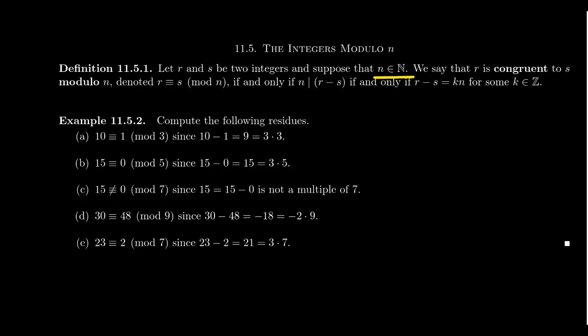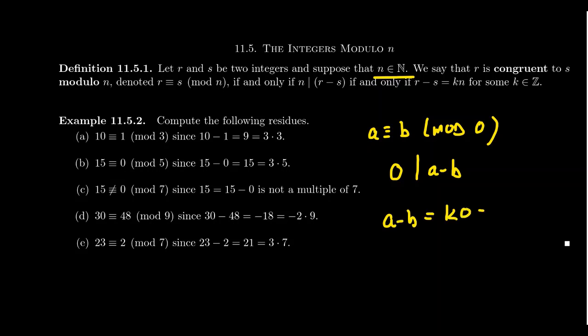When we talk about the natural numbers here, this includes 0 as an option. Many authors don't allow 0 as a modulus, but there's nothing wrong with it. If A is congruent to B mod 0, that means 0 divides A minus B, which forces A minus B to equal 0, meaning A equals B. So modulo 0 doesn't give a new relation — it's just the usual equality relation on integers.